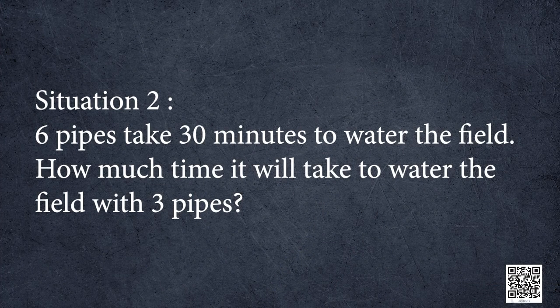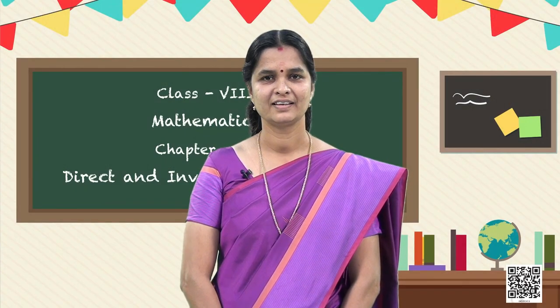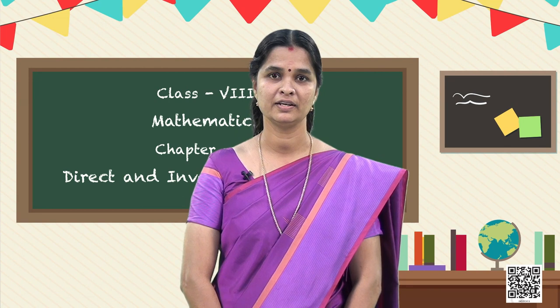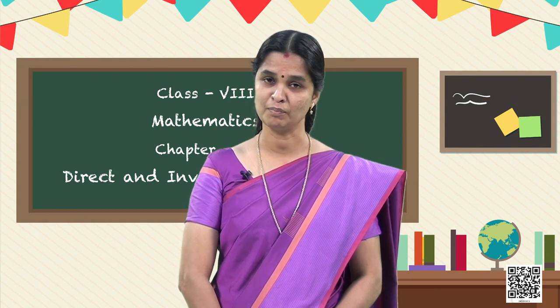Situation 2: 6 pipes take 30 minutes to water the field. How much time will it take to water the field with 3 pipes? When we have 3 pipes instead of 6, the time taken to finish the work will be more. In our daily life we can see many such situations where an increase in one quantity brings a decrease in the other quantity, or a decrease in one quantity brings an increase in the other. Can you list some more such situations?